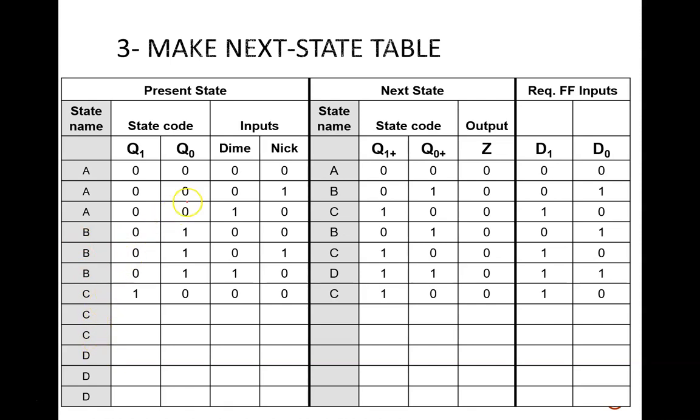There are two columns of inputs. One for dime, one for nickel. Each state name is listed three times, to cover the three arrows leaving each node. One row is for no money deposited. One row is for a nickel. And one row is for a dime.